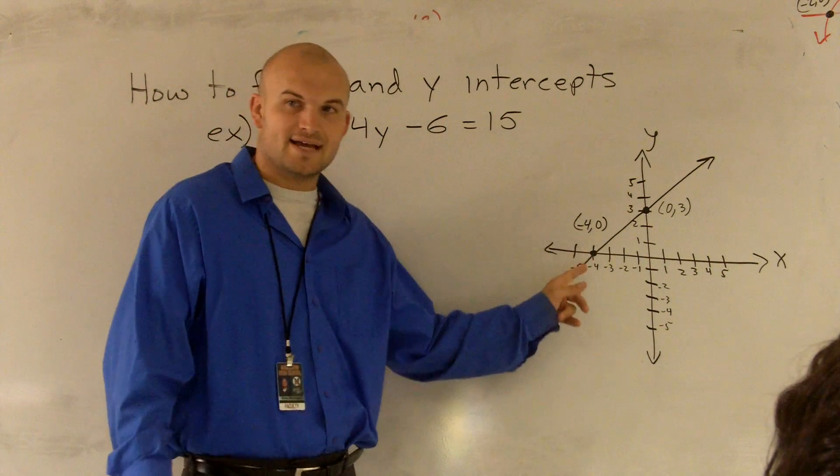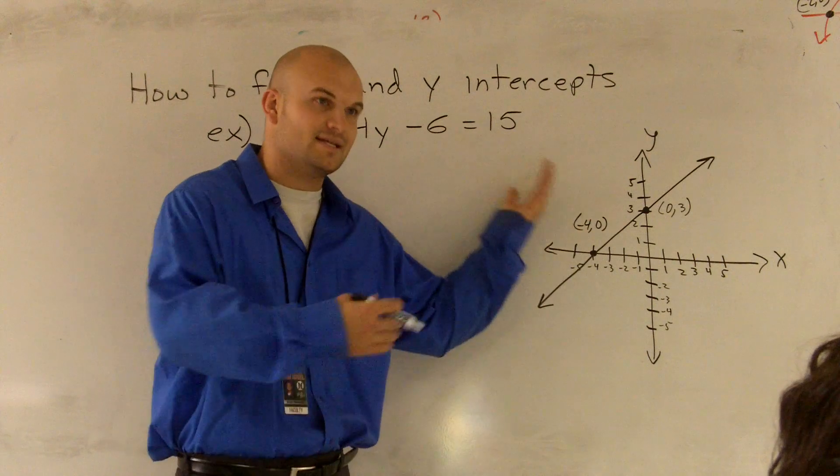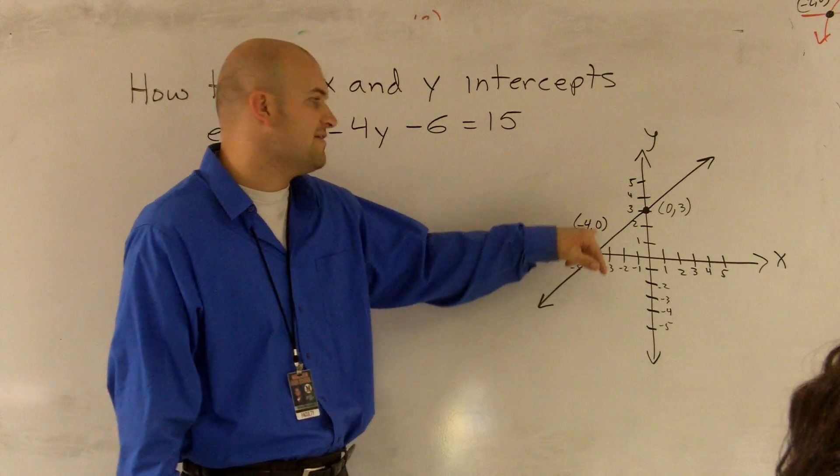And where my line crosses my x-axis, we call the x-intercept. Because it's intercepting the x-axis, we have a y-value of 0.